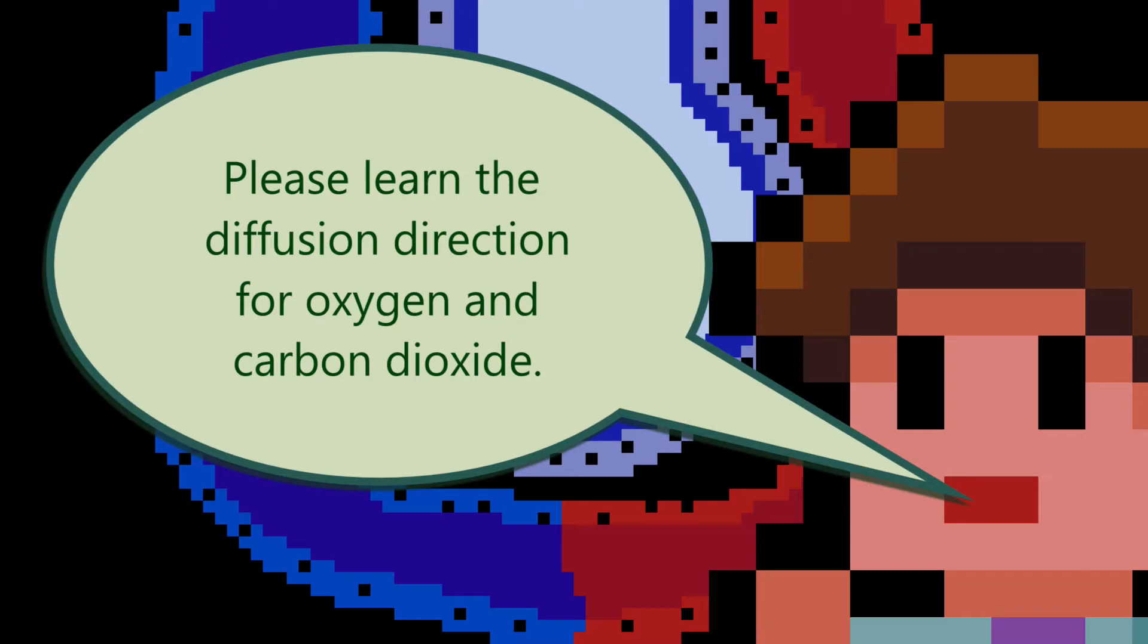On a diagram you will need to be able to add arrows showing the direction that oxygen and carbon dioxide are diffusing to. Oxygen is always moving into the blood via diffusion. Carbon dioxide is always moving into the alveoli via diffusion.